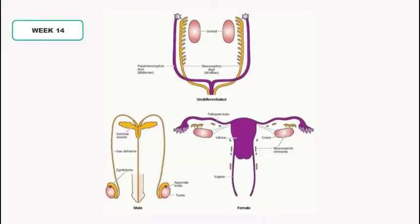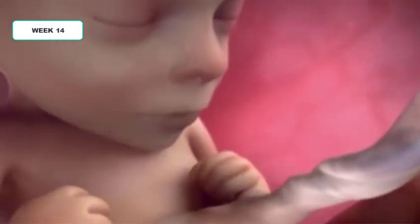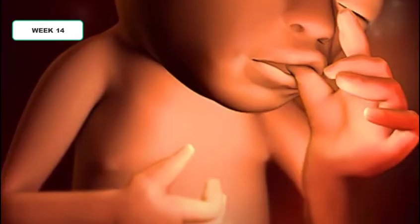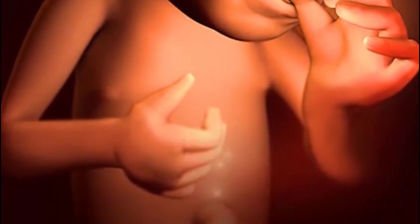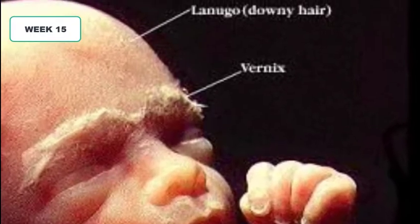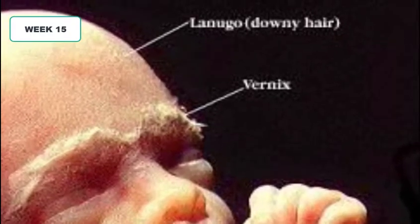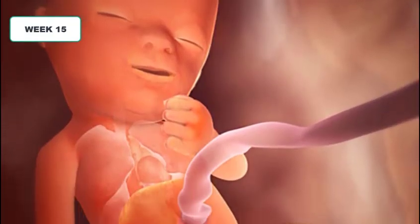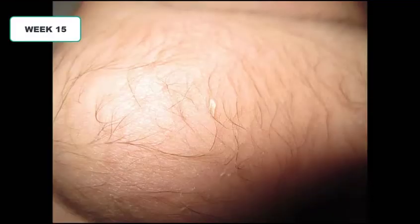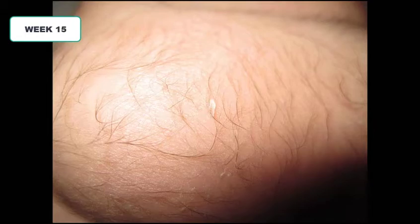At week fourteen all organs are formed. If it is a girl, the ovaries are now formed and are descending to their future position. Your baby is leaping and bounding inside your body. The neck is getting longer, helping the head to stand more erect. At week fifteen the body of the fetus has started being covered with fine soft hairs called lanugo, which help maintain normal temperature inside the womb. These are not like usual adult hairs and will fall out a little while before birth.